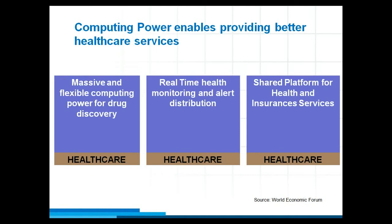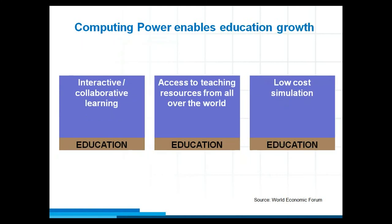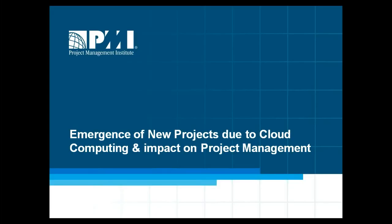In healthcare research, a lot of data gets captured during clinical trials. With computing power now available, more innovation and data analysis can be done, and better medicines can be released to the market because high computing power enables better decisions from data. In education, interactive and collaborative learning is possible all over the world. Learning content can be available at a very affordable price — even to rural villages — posted on cloud providers like Amazon or Rackspace, so that people in villages can access content at very low cost.